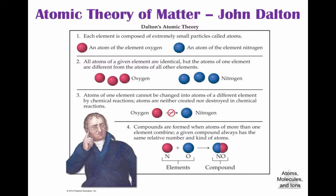Each element is composed of extremely small particles called atoms, and Dalton said they were indivisible. Well, we've had a modification to that, which you probably remember from first year. His second postulate is also no longer correct, and we're going to look at isotopes, which proves that wrong. His third postulate is based on the law of conservation of mass, and his fourth postulate was based on the law of definite proportions.